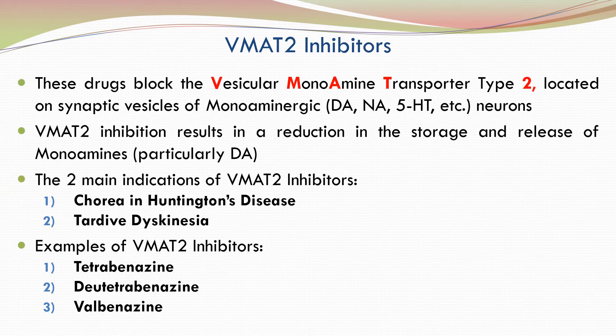Examples of VMAT2 inhibitors include tetrabenazine, deutetrabenazine and valbenazine. Tetrabenazine is an old drug while the other two are much more recent.